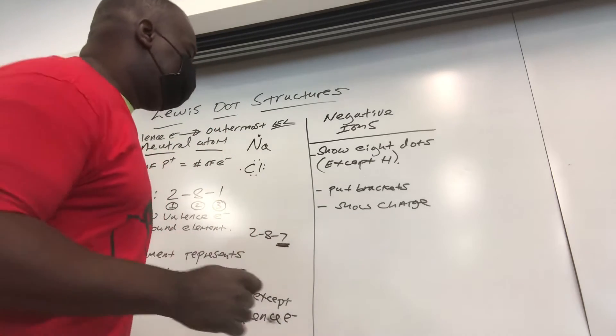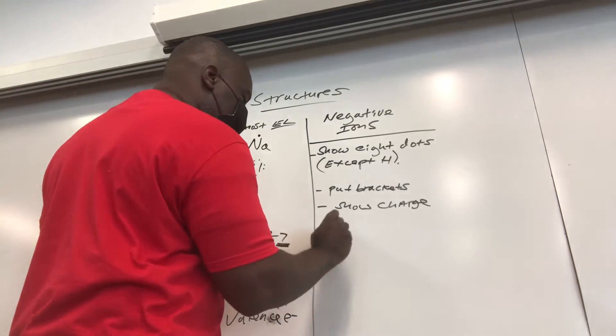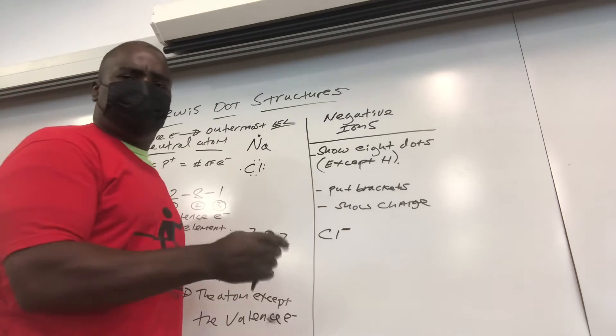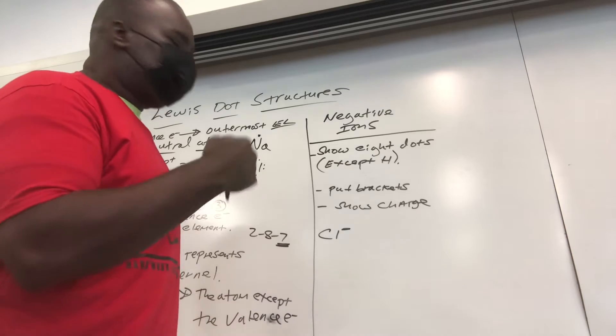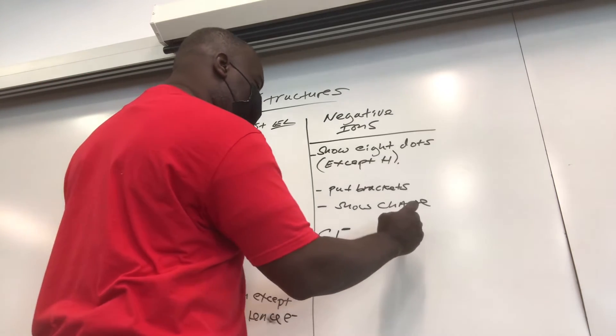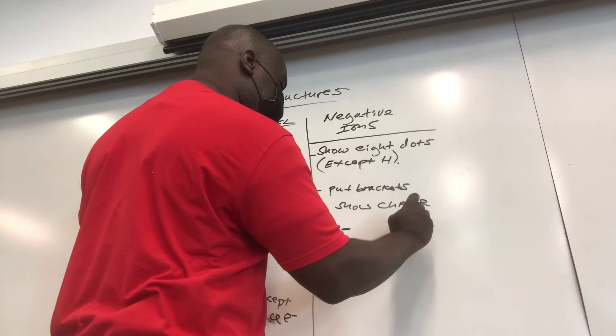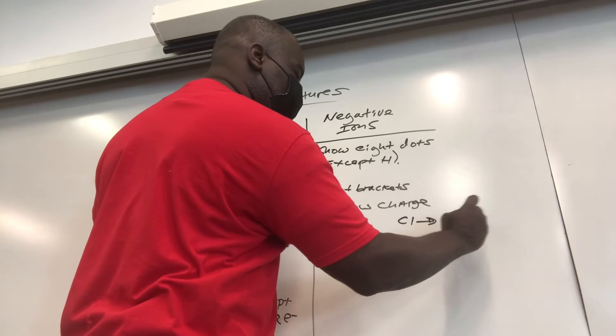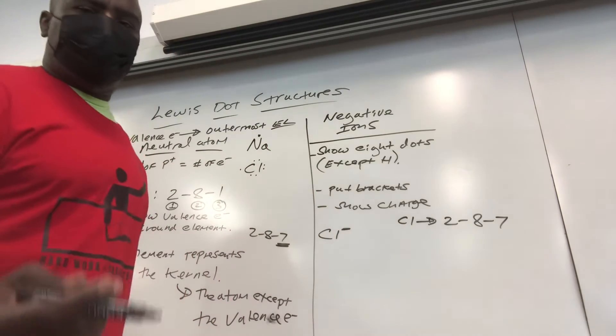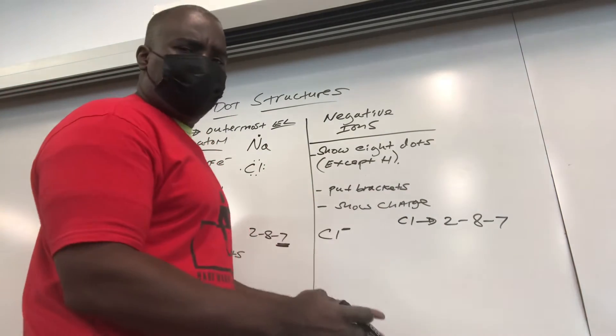So how are we going to do this? Let's say we have Cl minus, chloride ion, and they ask you to show the dot structure for this guy. You don't panic. You look at it normally. Normally, chlorine, regular chlorine Cl, would have been 2-8-7.